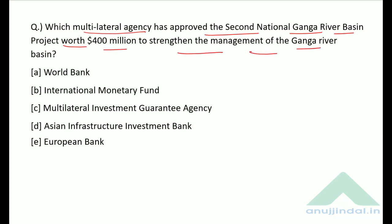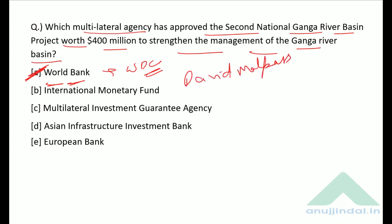Which multilateral agency approved the second National Ganga River Basin Project worth $400 million to strengthen the management of the Ganga River Basin? The correct answer is option A — the World Bank. The World Bank is headquartered in Washington DC and is headed by David Malpass.